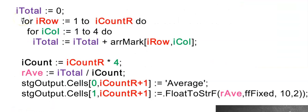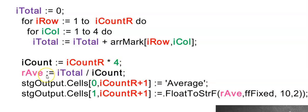Here is an example of doing a calculation for your entire array, not just a specific row or column. I'm calculating the average, so I'll need a running total that I initialize above my loop. I'm looping through my rows and columns, adding the mark from my two-dimensional array to this running total. I then multiplied my row counter by four — because there were four marks per learner — and I calculate the average using this running total divided by ICount.